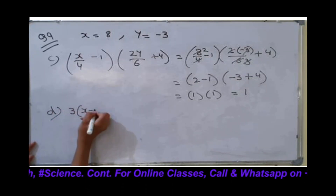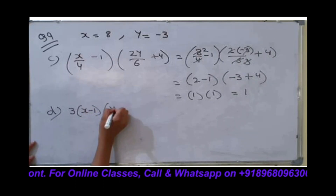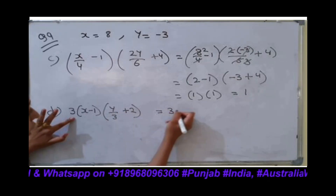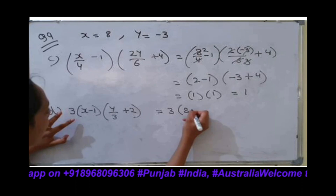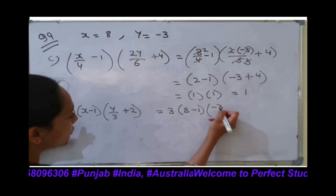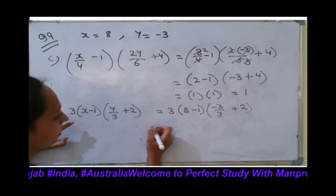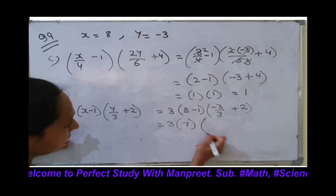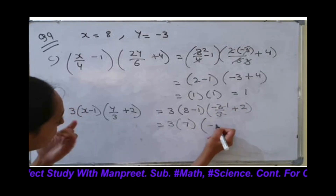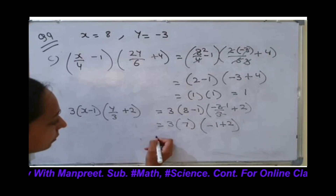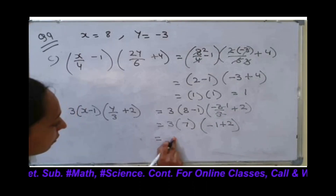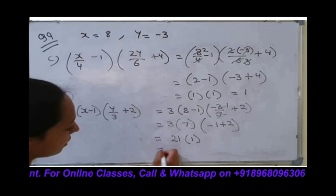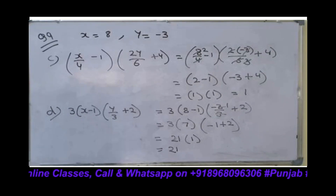Next is part D: 3x minus (1)(y divided by 3 plus 2). It equals 3 times 8 minus (1)(minus 3 divided by 3 plus 2). First solve the brackets: 8 minus 1 is 7, then minus 3 divided by 3 cuts to minus 1, so minus 1 plus 2. Then 7 times 3 equals 21. Our answer is 21.